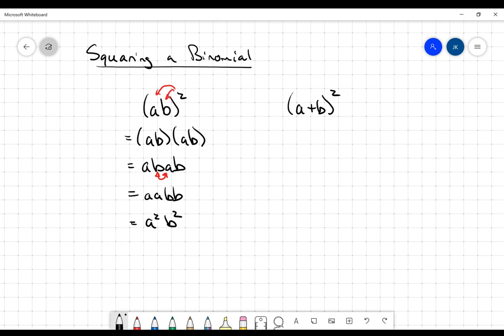That is not the same rule when it comes to squaring a binomial. When I square a binomial A plus B, I get A plus B multiplied by A plus B. Each of the terms in the first binomial gets distributed to each of the terms in the second binomial.